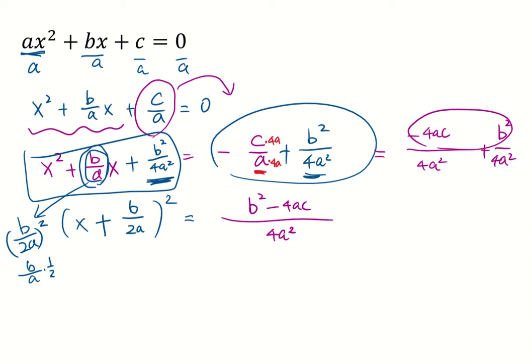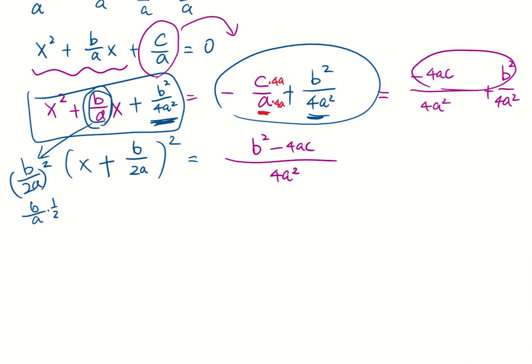Alright, let's keep going. So now we have an equation in the form of something squared equals to a number. Right here we can use the square root property. We can write that x plus b over 2a equals plus or minus square root of b squared minus 4ac over 4a squared.